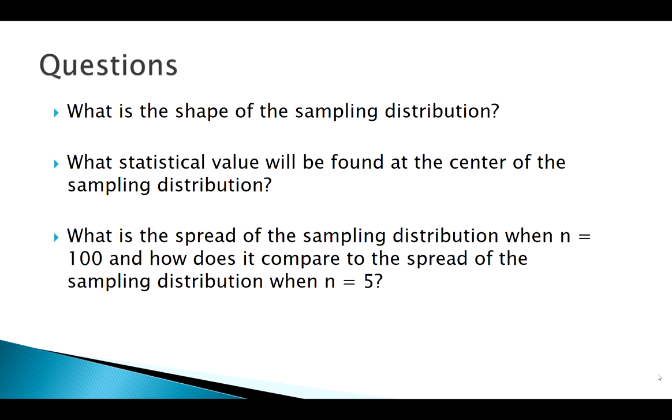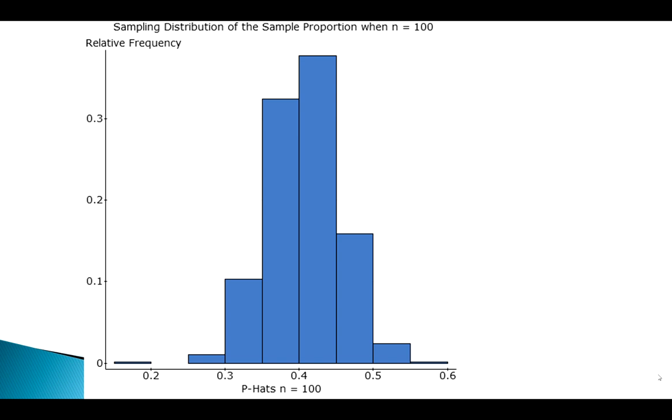And particularly here, how does the spread compare to when we looked at 1,000 samples of size 5? Does the spread seem to depend on something?